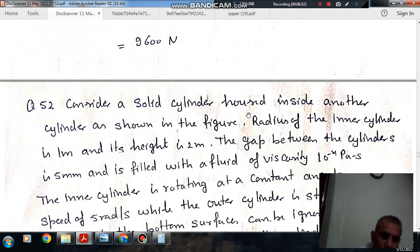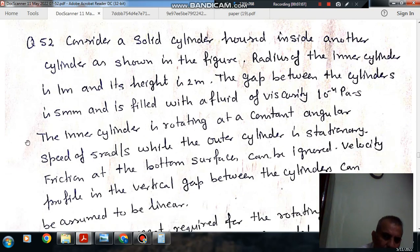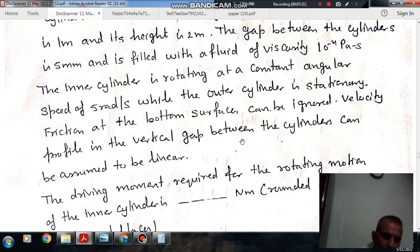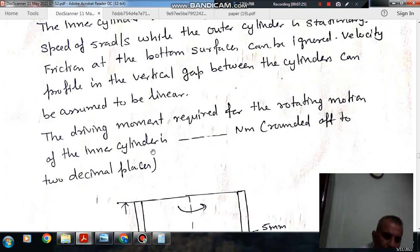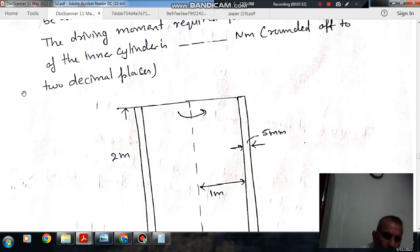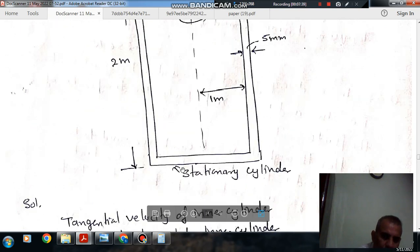Next, consider a solid cylinder housed inside another cylinder. The radius of the inner cylinder is 1 meter and height is 2 meters. The gap between cylinders is 5 mm and is filled with fluid of viscosity 10⁻⁴ Pascal-seconds. The inner cylinder is rotating at constant angular speed of 5 rad/s while the outer cylinder is stationary. Friction at the bottom can be ignored. Velocity profile in the gap can be assumed linear. Find the driving moment required.